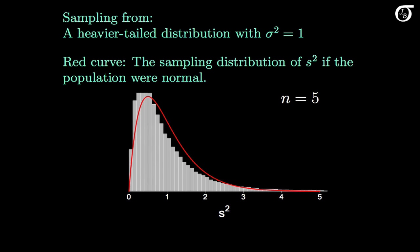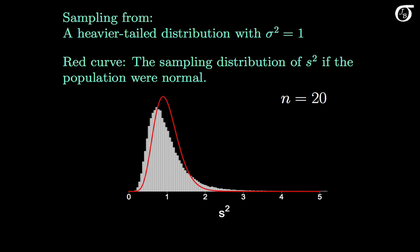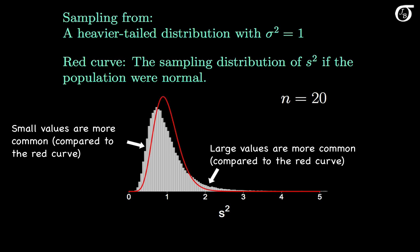The grey histogram represents 100,000 simulated values of s squared — approximately the sampling distribution of s squared in this scenario. We can see there is quite a bit of right skewness, and there is more variability in s squared than when sampling from a normally distributed population. For a sample size of 20, the grey histogram has more skewness than when sampling from a normally distributed population, more extreme values — both more large and more small values of s squared, and fewer values in the middle. The variance of the sampling distribution of s squared is greater than when sampling from a normally distributed population.